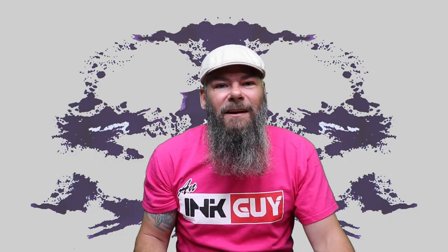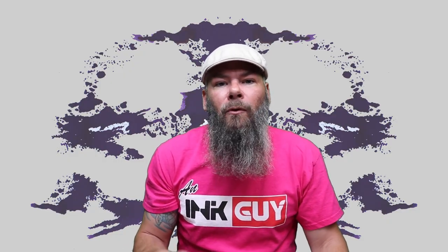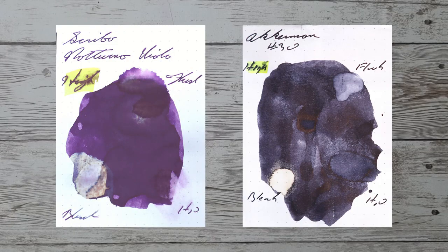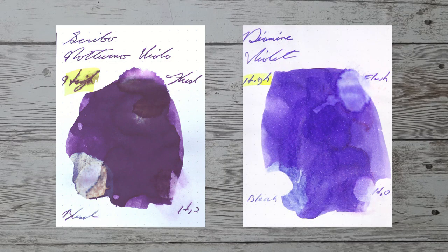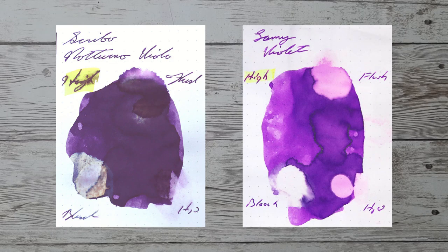With hundreds of inks tested, let's take a look at a couple color comparables. Here is Ackermann number 30. Here is Cross Violet. Here is Diamine Violet. Here is Lamy Violet.